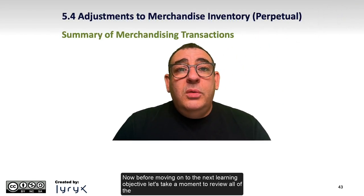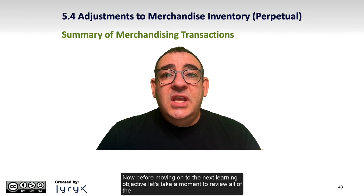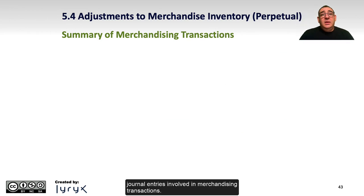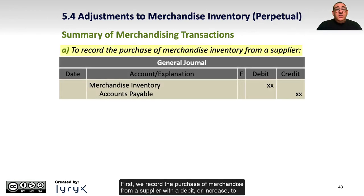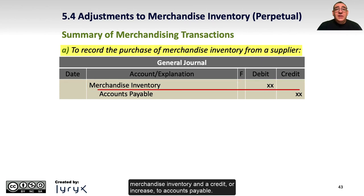Now, before moving on to the next learning objective, let's take a moment to review all of the journal entries involved in merchandising transactions. First, we record the purchase of merchandise from a supplier with a debit, or increase, to merchandise inventory, and a credit, or increase, to accounts payable.